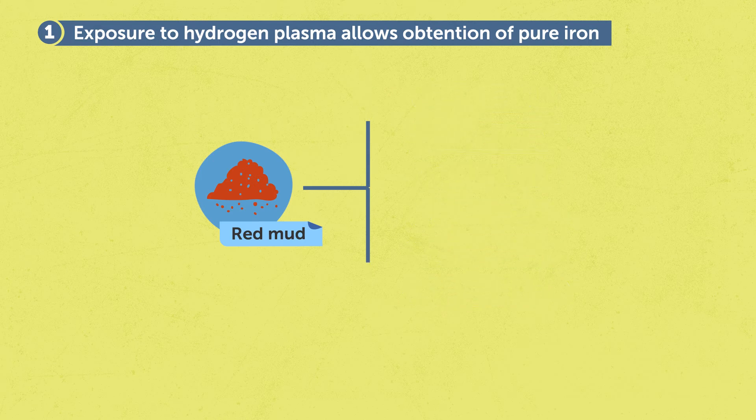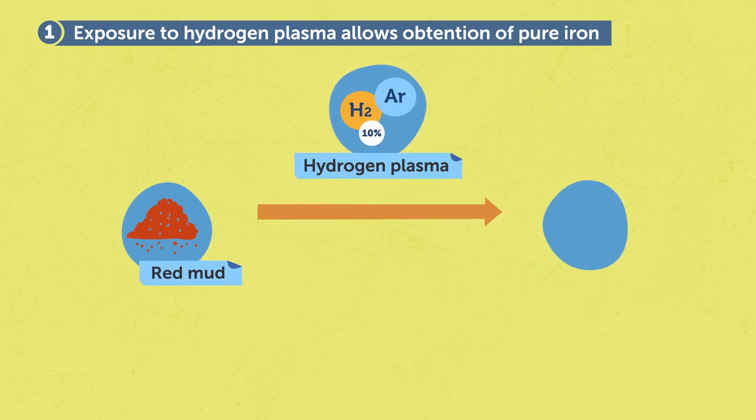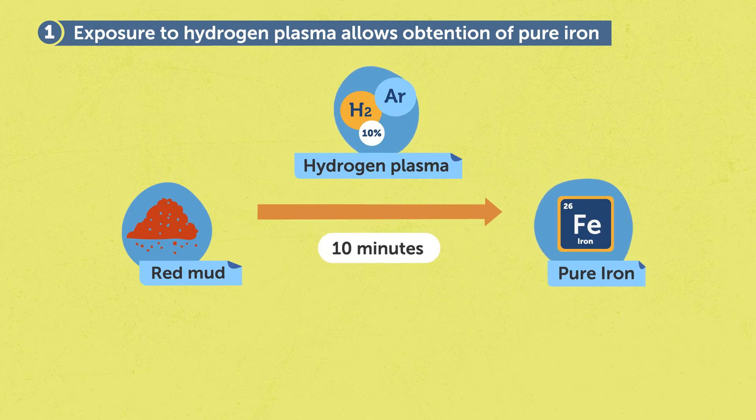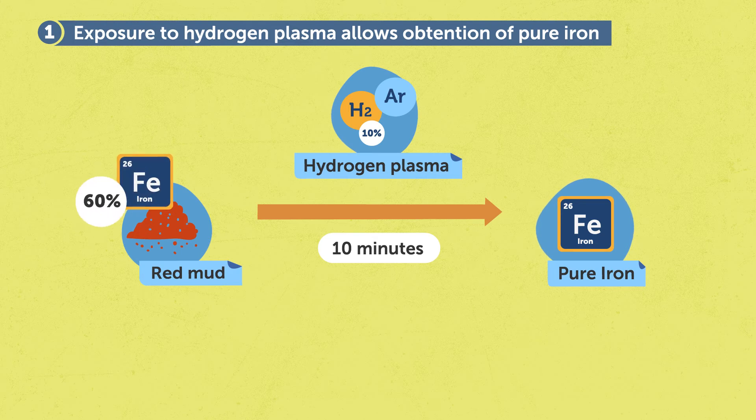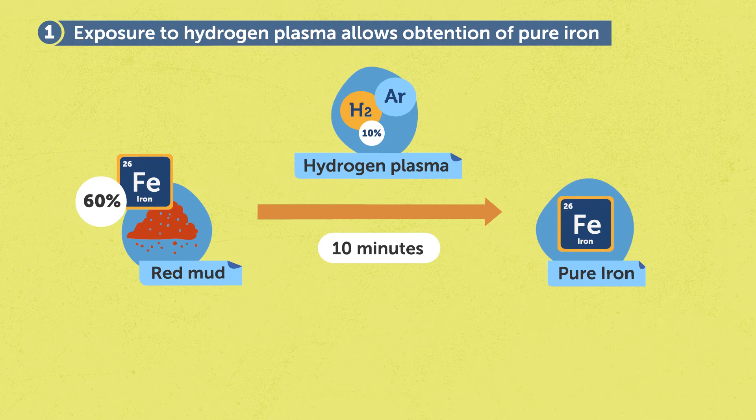By reducing the material with hydrogen plasma, we found that only 10 minutes of process was enough to convert 6% of all iron atoms of the original red mud into metal.